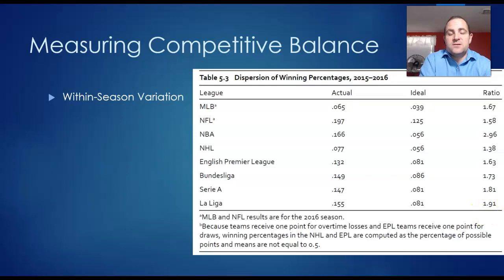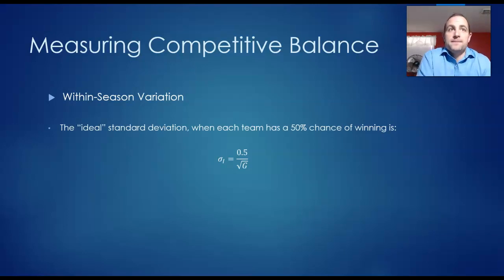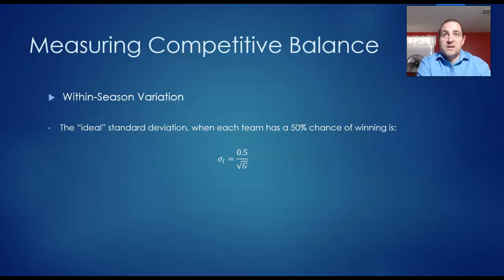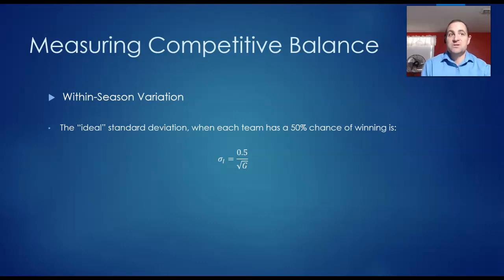A way to account for the difference in the number of games is to look at what's known as the ideal standard deviation, which tells us how far out of balance the league was. The ideal standard deviation assumes each team has a 50% chance of winning — sigma-i equals 0.5 divided by the square root of the number of games in a season. In baseball with 162 games, the ideal standard deviation is 0.039. In the NFL with only 16 games, there is much more randomness and the ideal standard deviation is 0.125. In the NHL and NBA with 82-game schedules, it is 0.056.